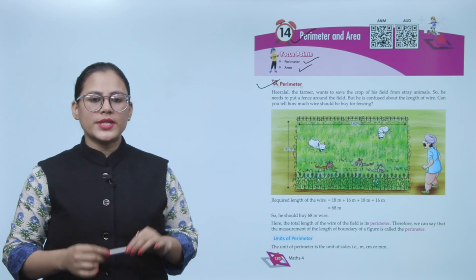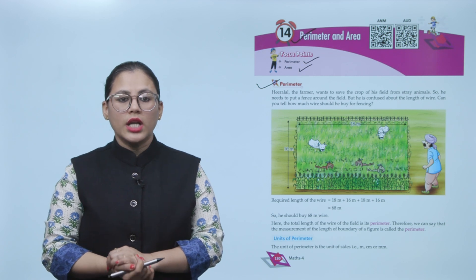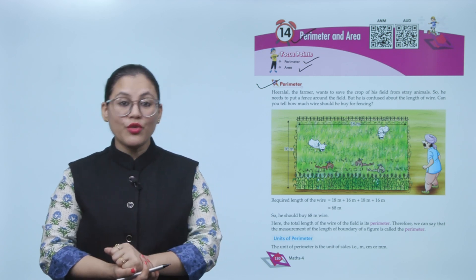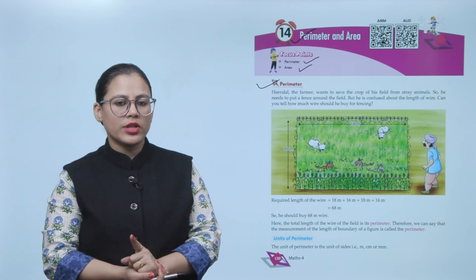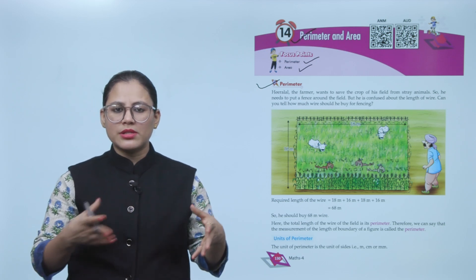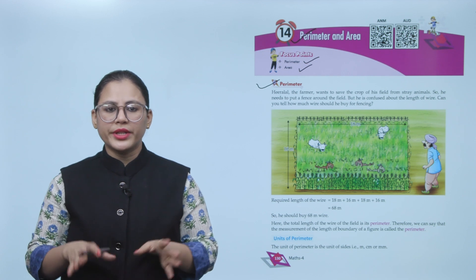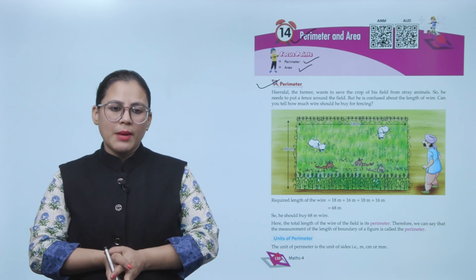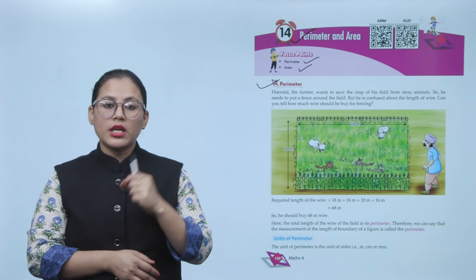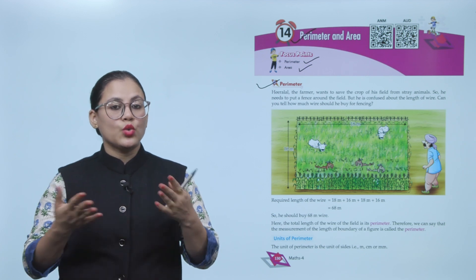Hira Lal, the farmer, wants to save the crop of his field from stray animals, so he needs to put a fence around the field. But he's confused about the length of wire. Can you tell how much wire he should buy for fencing? He wants to save his crops from stray animals, and he's doing fencing.